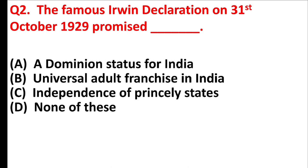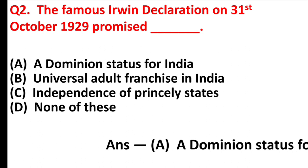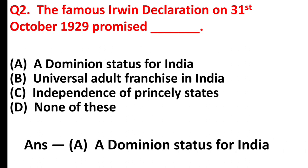The famous Irwin Declaration on 31 October 1929 promised — Option A, a Dominion Status for India.